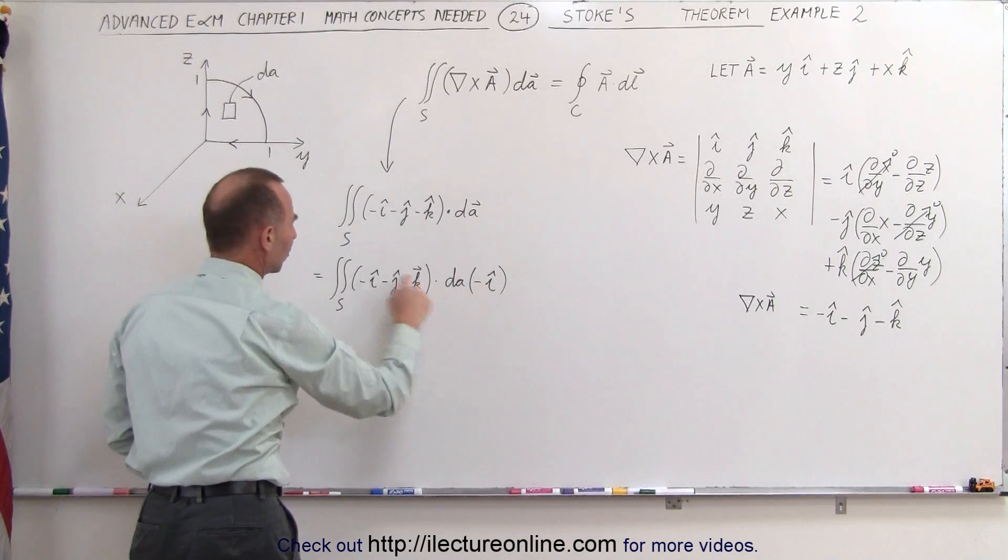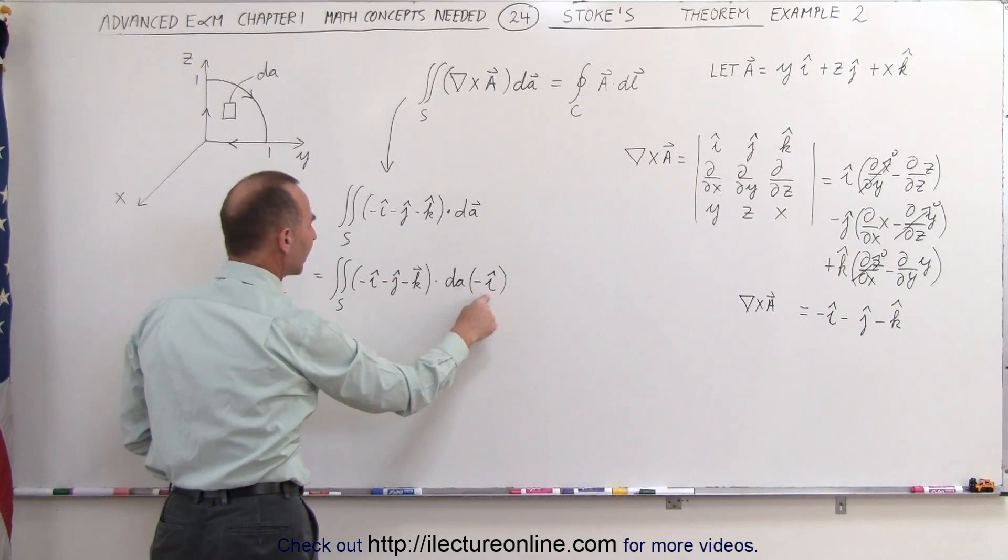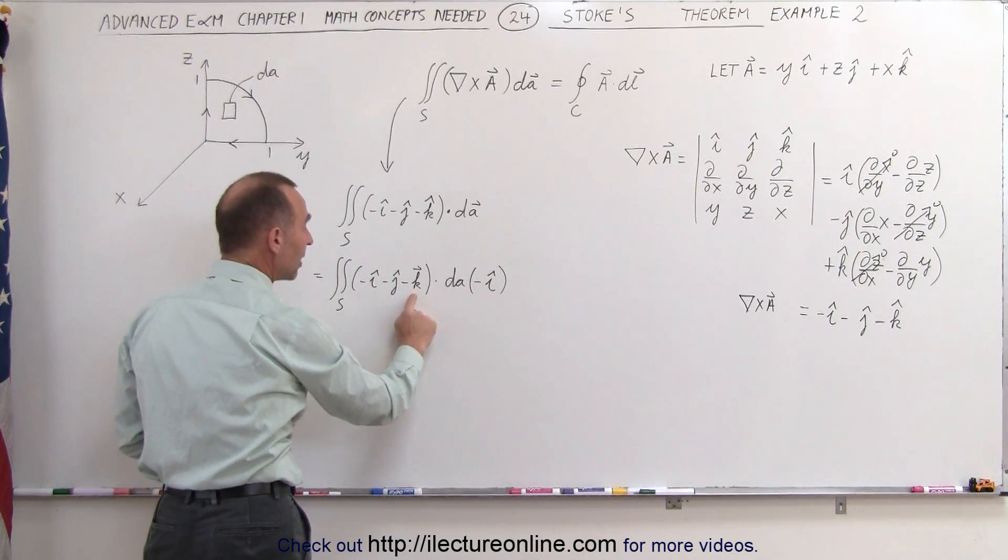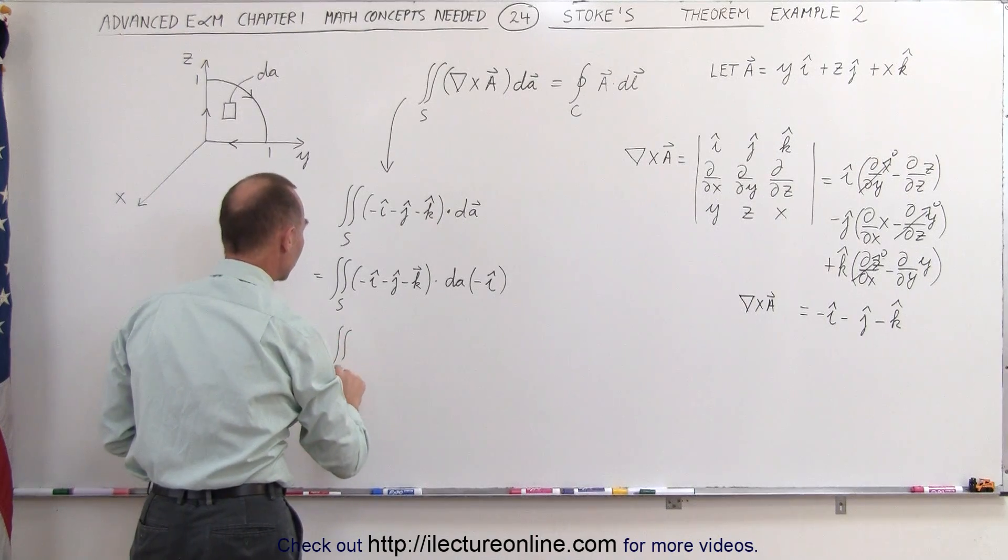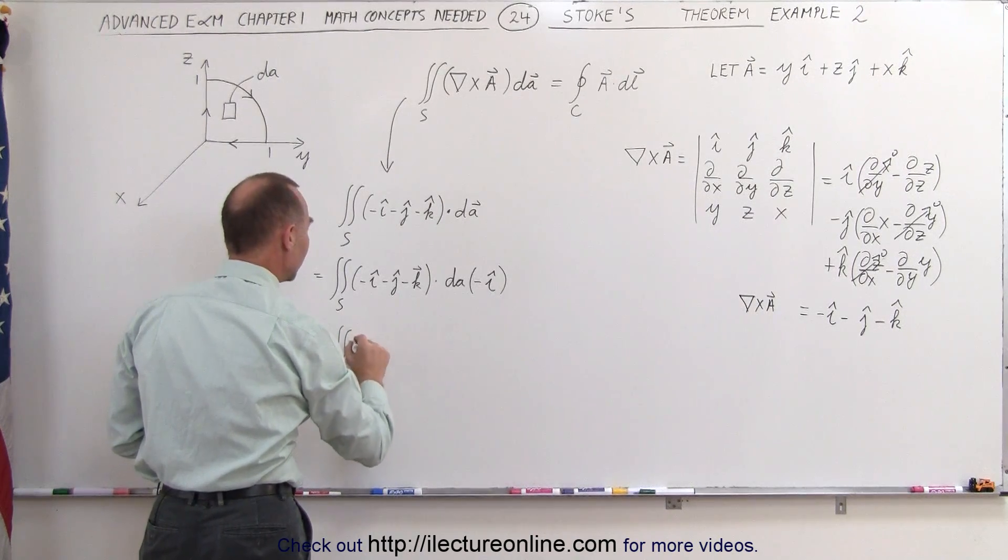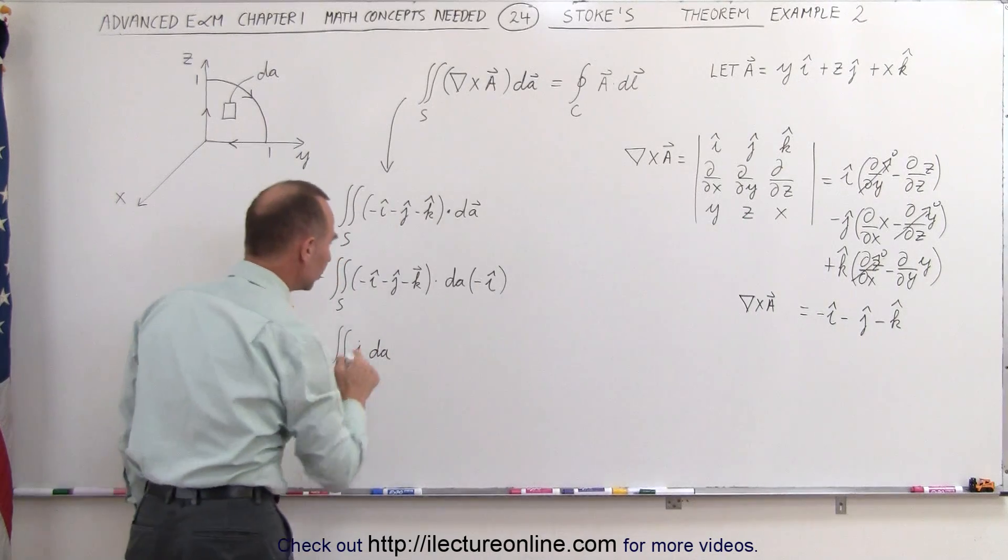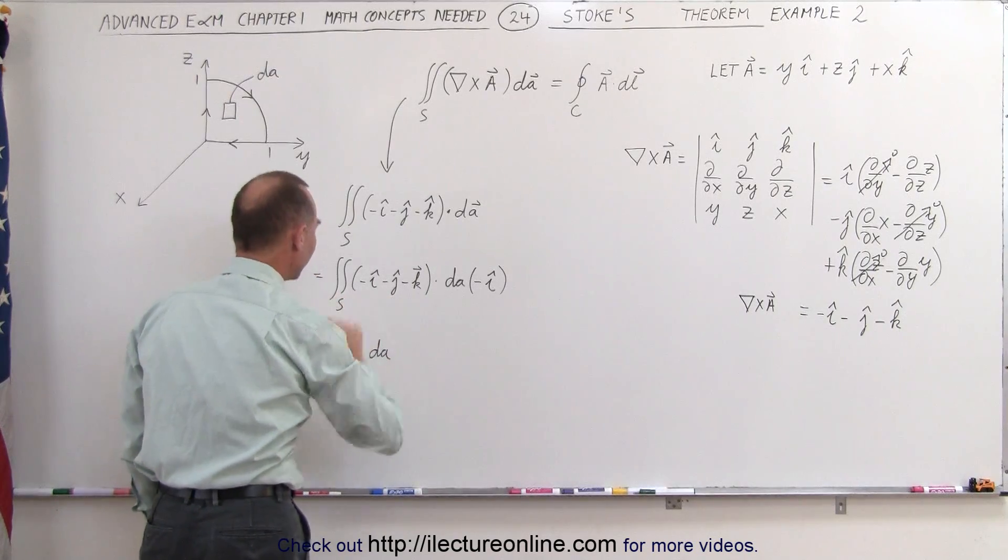So this minus cancels out all those minuses, and now notice when you multiply an i times i, you get 1, but when you multiply an i times j, you get 0, and an i times k, you get 0, which means this simplifies into the surface integral of 1 times dA.